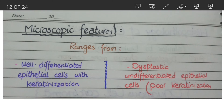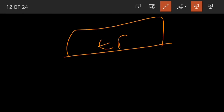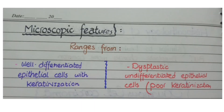Now let's come to the microscopic features. Just like all other epithelial carcinomas, you see epithelial cells invading the basement membrane, forming separated masses of carcinoma. The morphology of these invading cancers can be well-differentiated squamous cells with prominent keratinization, or the cells may be poorly differentiated — meaning they do not resemble squamous epithelium and do not show prominent keratinization.